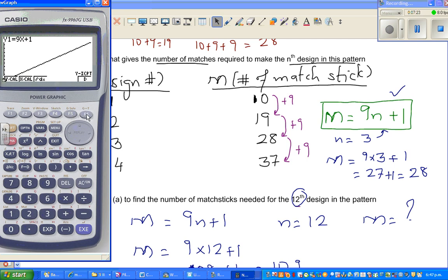And then to check your answer, you want to find y. So the calculator is asking, what's your x? x is 12. You can put any number. When x is 12, y is 109. When x is 4, y should be 37.